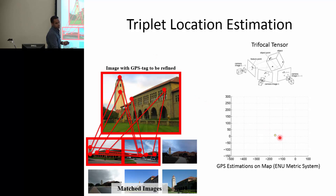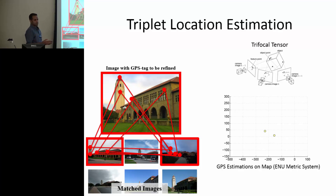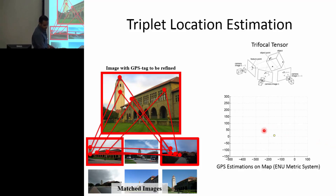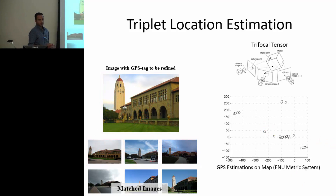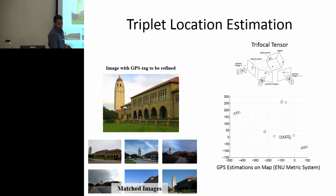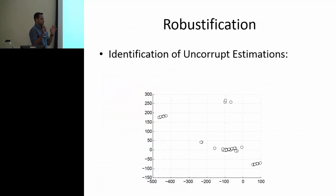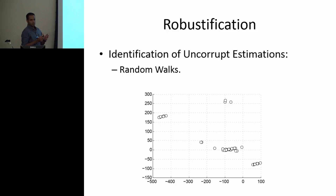That estimation is shown here on the east-north GPS coordinate system. We move on to the next feasible triplet and come up with another estimation, and we do this for all feasible estimations. We end up with a large number of GPS location estimations for the image we're looking at. Since these estimations come from the GPS locations of the matched images, they are all expected to have some inaccuracies. So we use random walks on these estimations to identify the subset that are consistent and expected to be accurate.